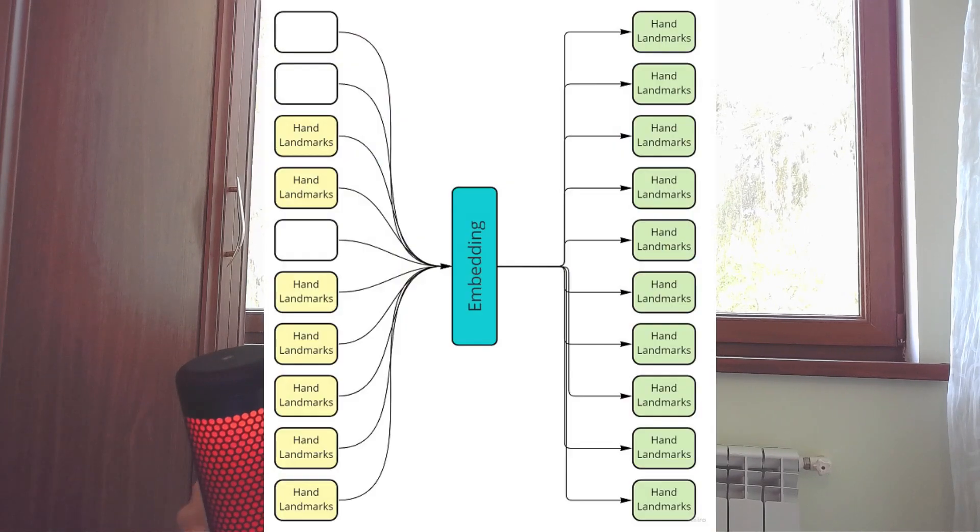The second way to use the temporal component is to cure knocked-out points. It's pretty common for some points in a detection to be missed — sometimes one or two points, sometimes a whole set of points. When you compress the initial sequence using an autoencoder and then restore it, you can train the neural network to restore the missed points, and it works reasonably well.